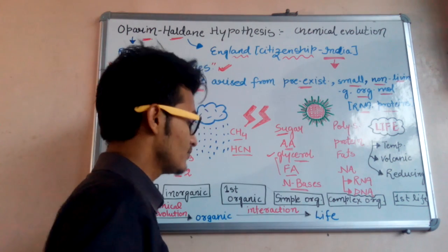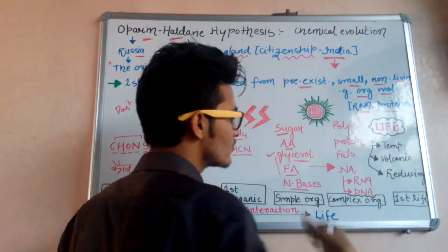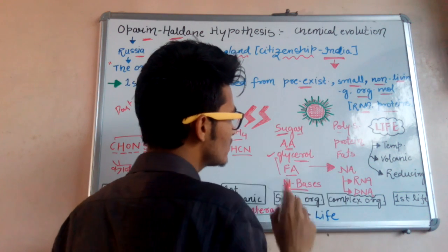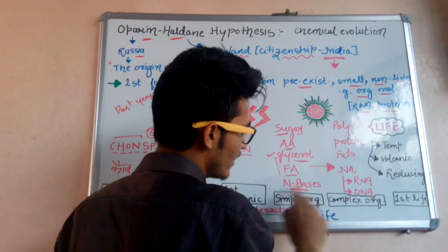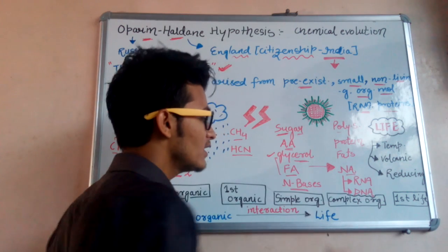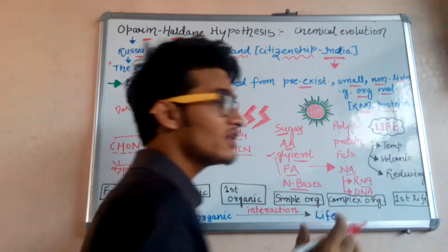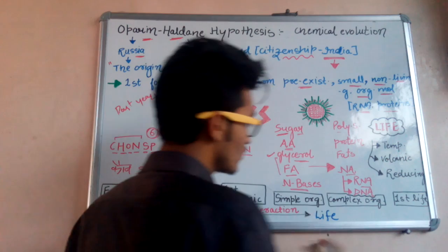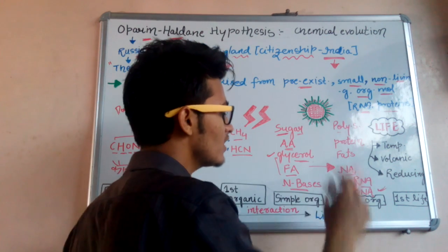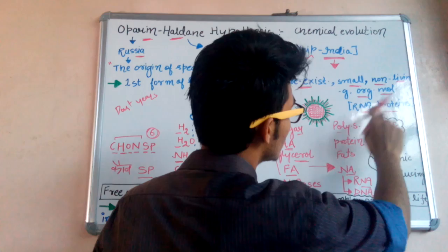These simple organic molecules then polymerize to form complex polymers. For example: monosaccharides form polysaccharides, amino acids form proteins, fatty acids and glycerol combine to form fat, and nitrogenous bases combine to form nucleic acids — either RNA (ribonucleic acid, with ribose sugar) or DNA (deoxyribonucleic acid, with deoxyribose sugar).